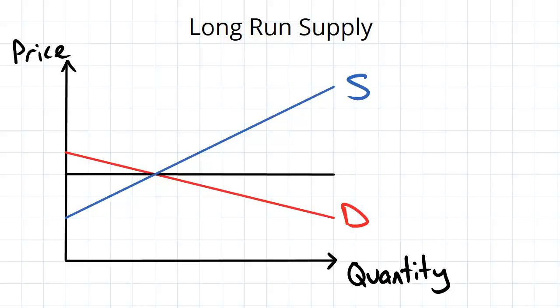But we learned in the last video that in the long run there is a second effect as a result of prices changing. Now imagine that this price at equilibrium here is the price at which most firms in the market are making a normal profit,